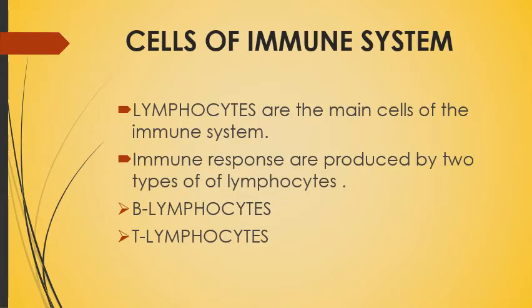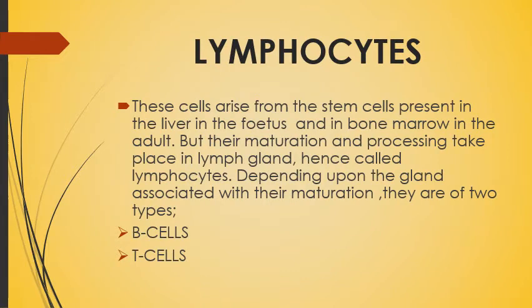The very important and main cells of the immune system are the lymphocytes. Lymphocytes are part of the WBCs. Immune responses are produced by two types of lymphocytes: B lymphocytes and T lymphocytes. These arise from stem cells present in the liver in the fetus and in bone marrow in the adult, but their maturation and processing takes place in lymph glands, hence the name lymphocyte.